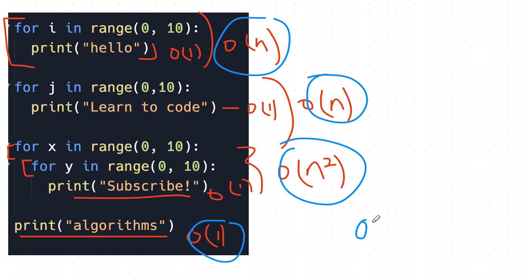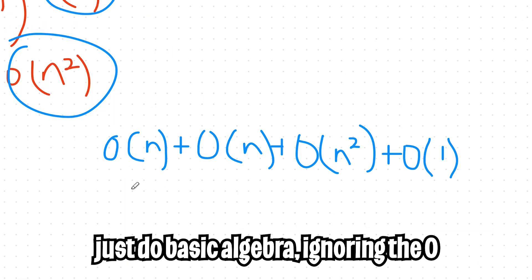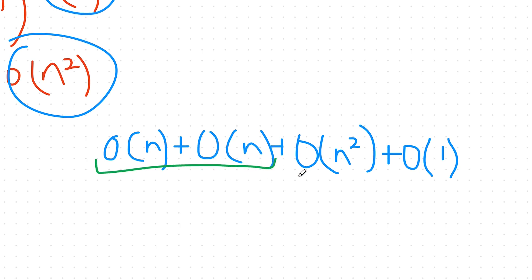So the runtime of this algorithm is O of N plus O of N plus O of N squared plus O of 1. So now we just do basic algebra and add everything up. So these two O of Ns can be added together. This can be left alone and this can be left alone. So now we're just left with O of 2N plus O of N squared plus O of 1.